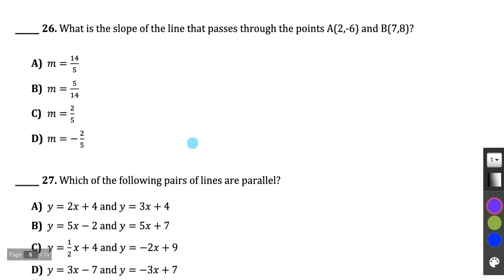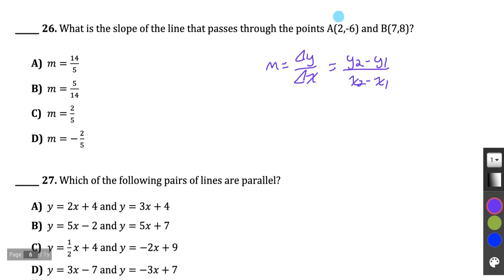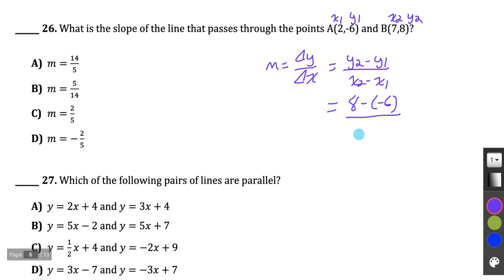Question 26: What is the slope of the line passing through two points? Slope equals change in y over change in x, calculated as (y2 minus y1) over (x2 minus x1). Using the two given points: 8 minus negative 6, divided by 7 minus 2 — be careful subtracting a negative. That gives 14 over 5, which is the answer.